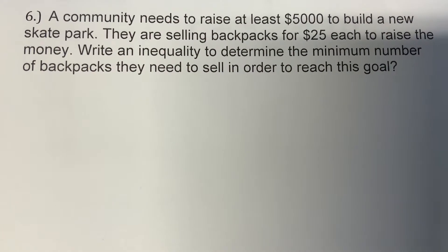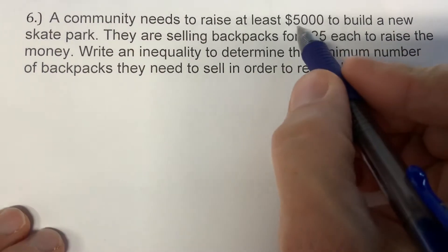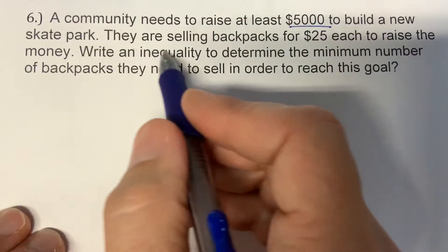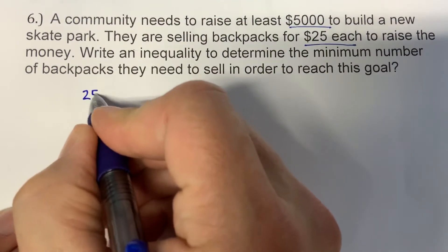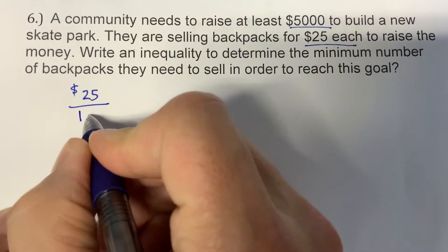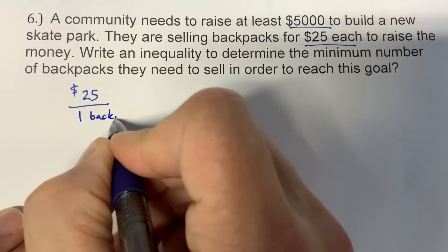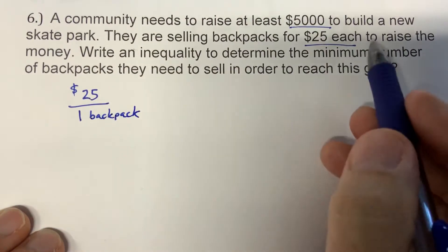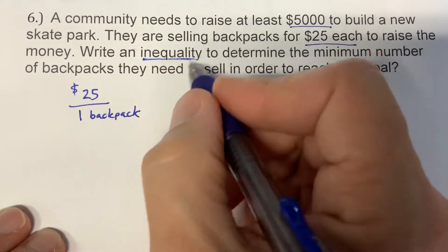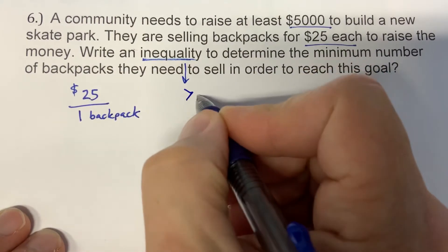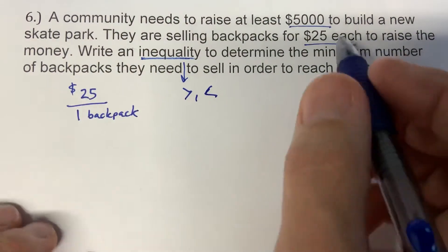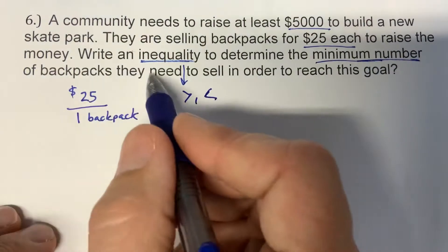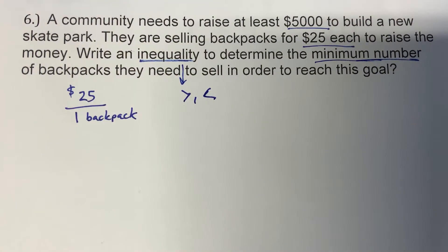For our next one, it says a community needs to raise at least $5,000 to build a new skate park. They're selling backpacks for $25 each — $25 for one backpack — to raise the money. Write an inequality, and remember an inequality is a greater than or less than, to determine the minimum number of backpacks they need to sell in order to reach the goal.